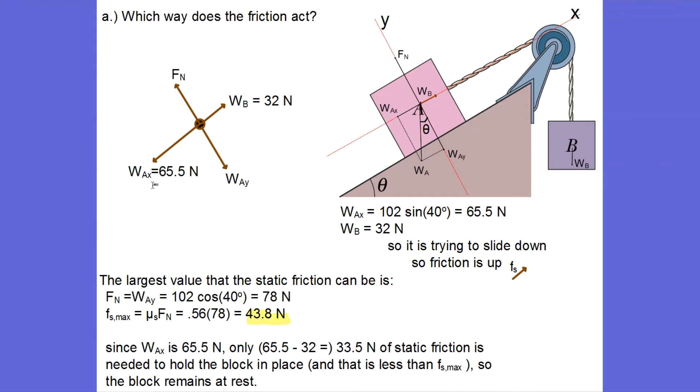How did I get this number here, 65.5? Well, it was given to me that the weight of A was 102 newtons, and so this angle is given to be 40 degrees. A little geometry shows that that same angle appears between the vertical and the y axis, so 102 sine 40 is 65 and a half newtons for my value of W_Ax.